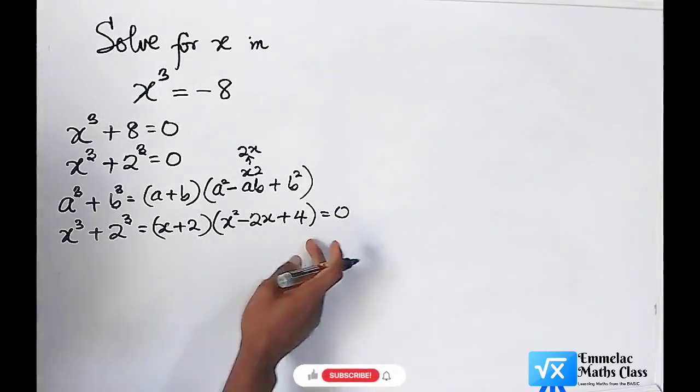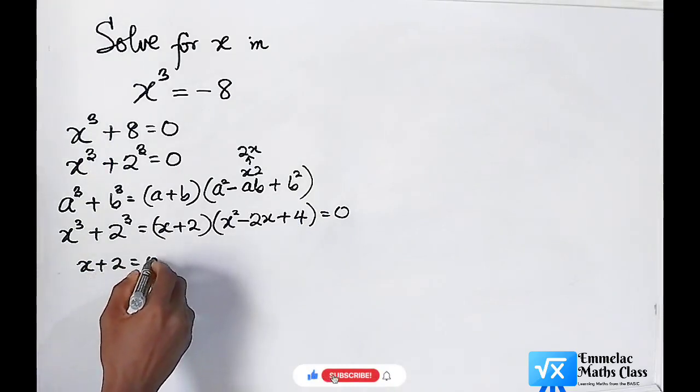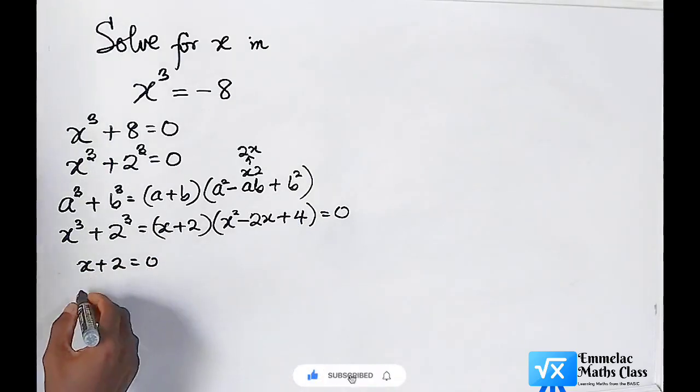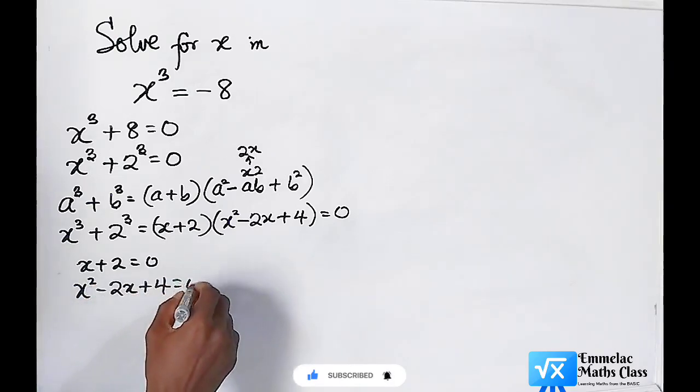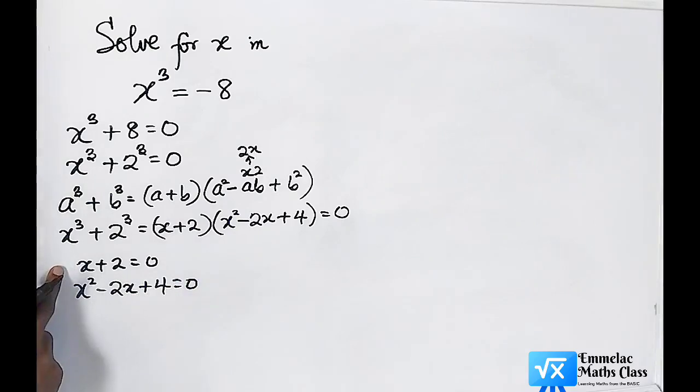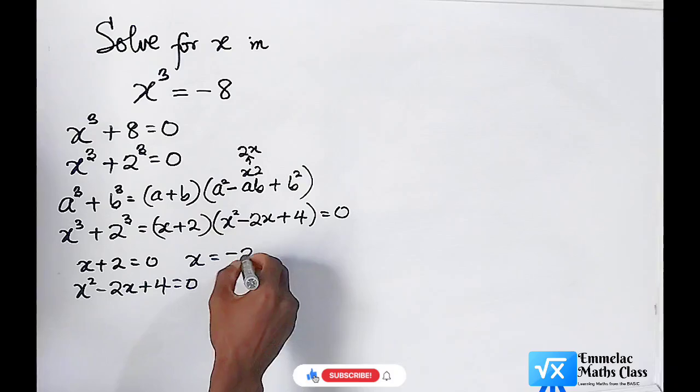You can now see that x + 2 = 0 (equation 1), and x² - 2x + 4 = 0. From the first equation, we can see that x equals negative 2.